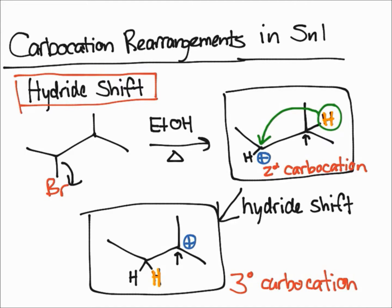This product is more stable because it's a tertiary carbocation. Hypothetically, there is a hydrogen on the other side too, but if that hydrogen shifted over, you would get a primary carbocation, which is not stable at all and very unlikely to form. That's why the hydrogen drawn in gold shifts — to create the tertiary carbocation, which is most stable. But remember, it's not going to be the only product that forms.